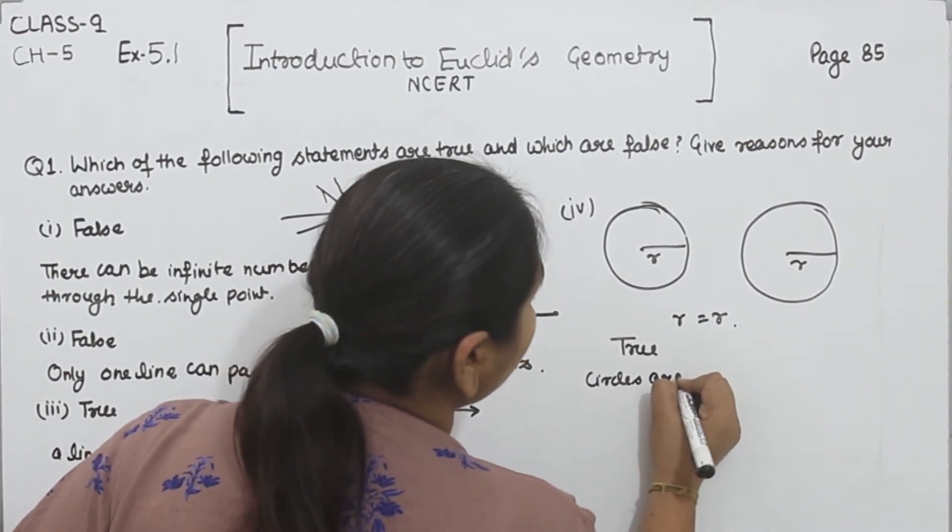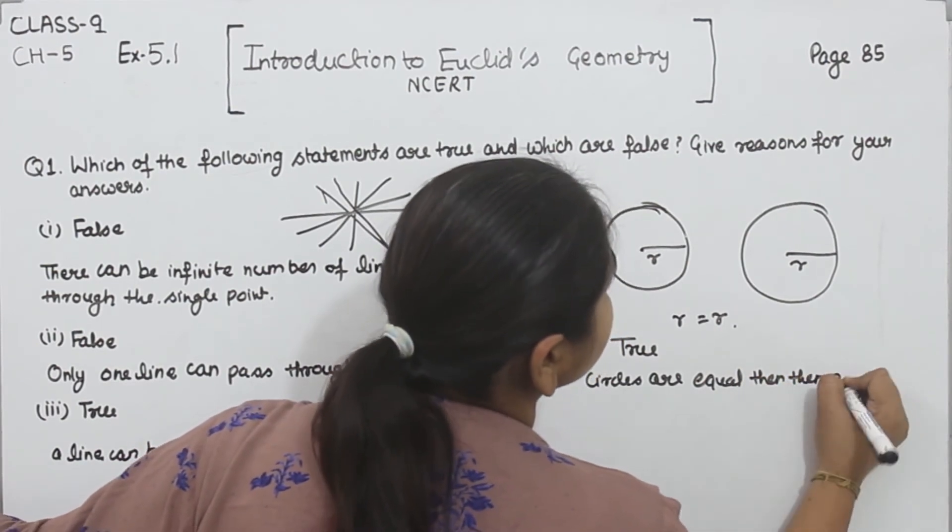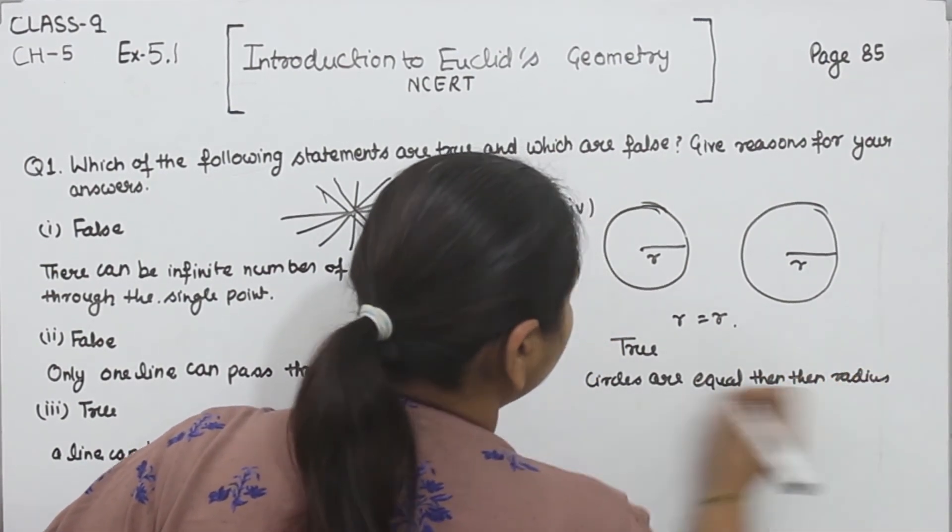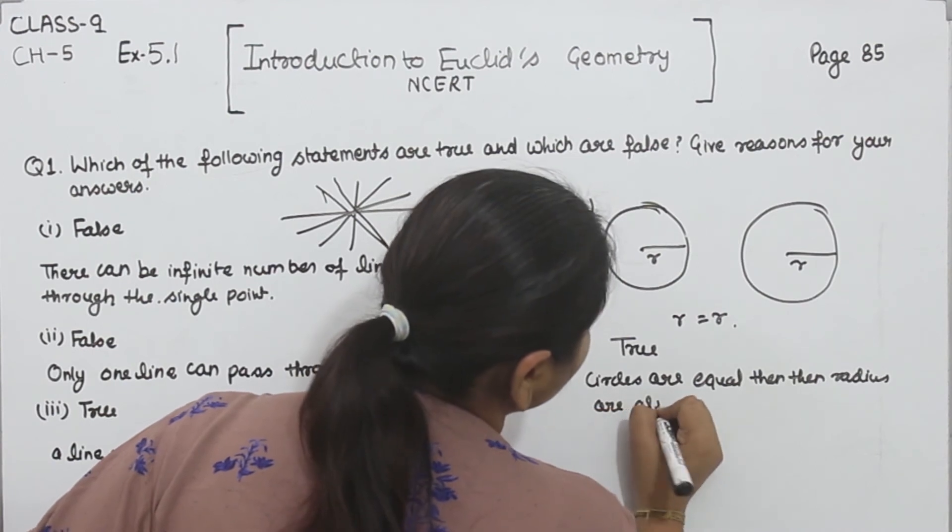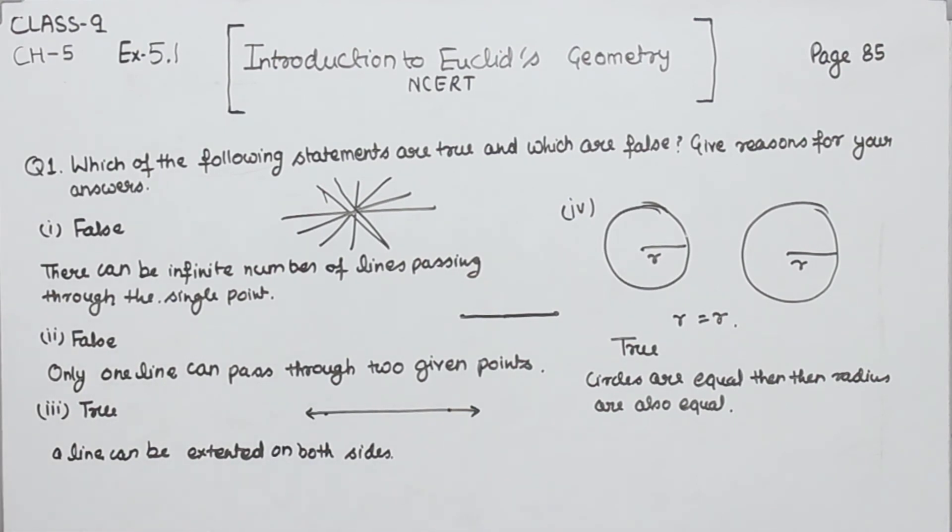Circles are equal, then the radius are also equal. This is the fourth one.